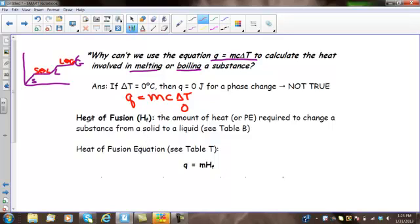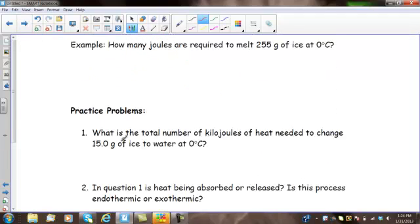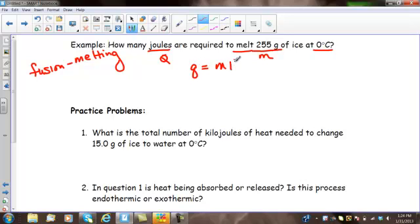The heat of fusion. Heat of fusion is defined as the amount of energy required to change a substance from a solid to a liquid at its melting point. At its melting point. Heat of fusion from table T, as I just showed you, is Q equals MH sub F. So, let's take a look at this first problem together. How many joules, so we know that we're being asked for Q, are required to melt 255 grams of ice, there's our mass, at zero degrees Celsius.